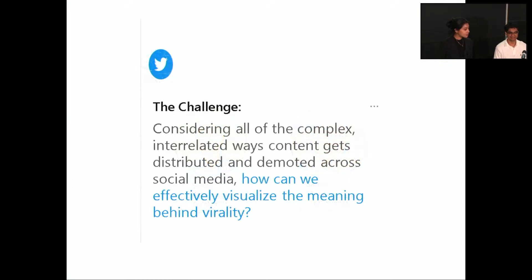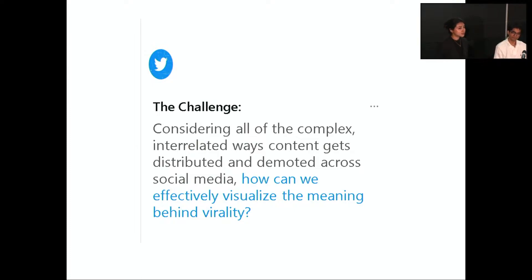A couple of months ago we were given a pretty big challenge. One conclusion from the symposium is that virality is far from a simple subject, even though it's a term we use all the time — it's kind of deceptively familiar. But when we take all of the complex algorithms, content types, and ways of defining virality, how do we move everything together and take this complex ecosystem into a digestible understanding through visualization? How do we visualize virality? There were a lot of different things we had to assess before we could answer this question.